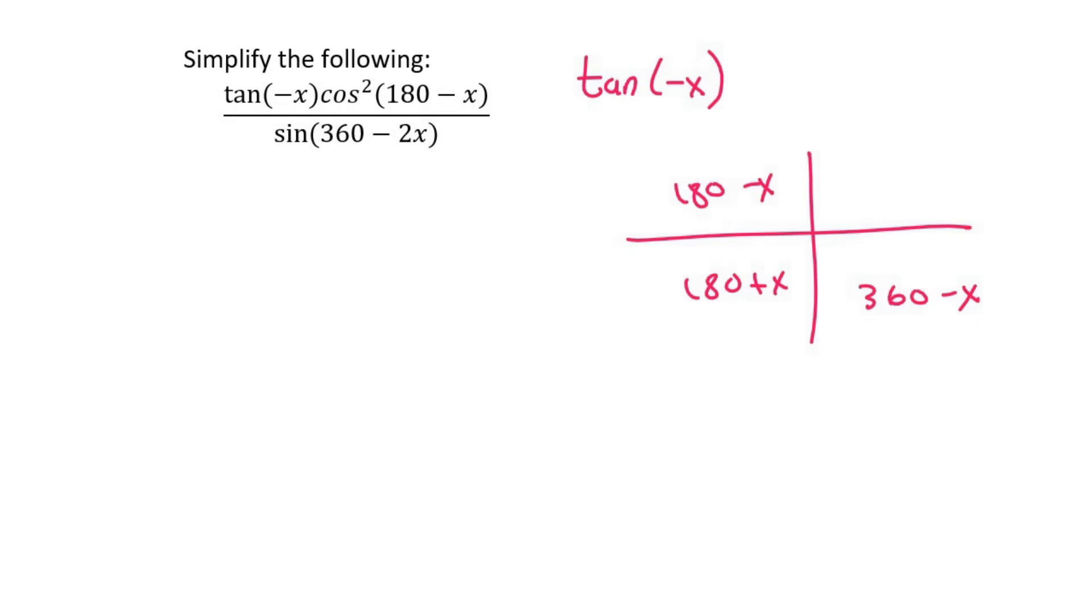What you want to do instead, remember I've told you this in previous videos, is that when this angle is not the same as any of these, then you can modify it by either adding 360 or subtracting 360. So I'm going to add 360. Now when you add, order doesn't matter, so I can switch this around to 360 minus x.